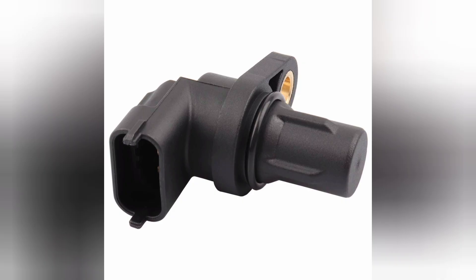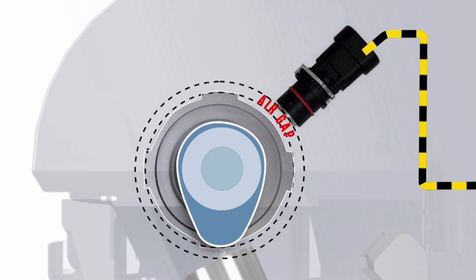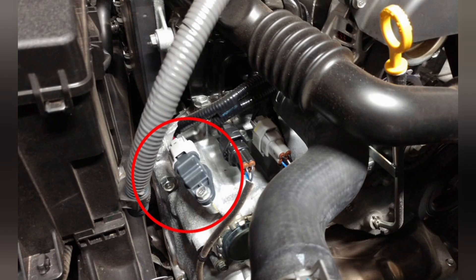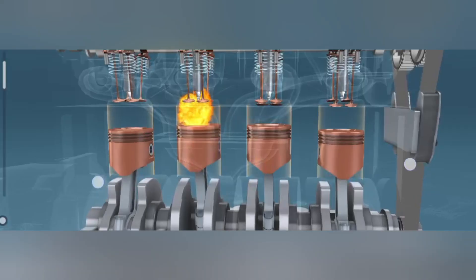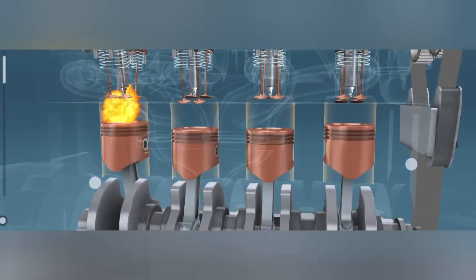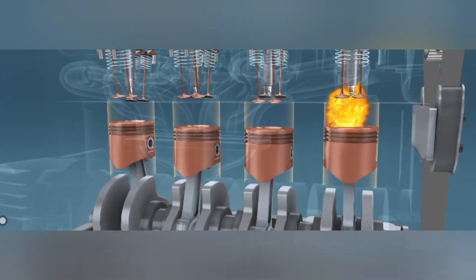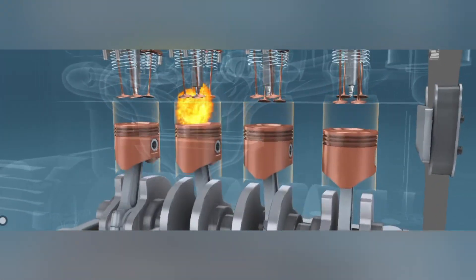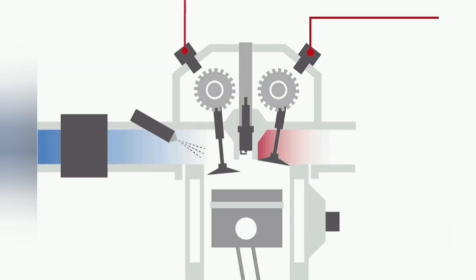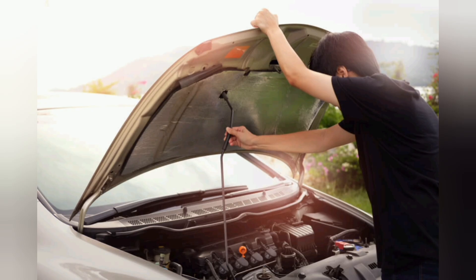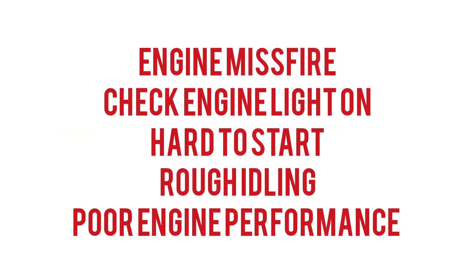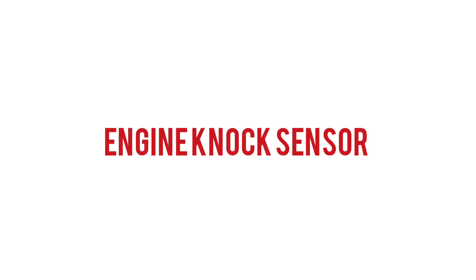Camshaft position sensor: it is one of the important sensors in the engine. The camshaft position sensor is located in the cylinder head. Its function is to identify the exact position of the camshaft. It works together with the crankshaft position sensor to maintain correct ignition timing. If the cam sensor fails, it is very difficult to start the engine.